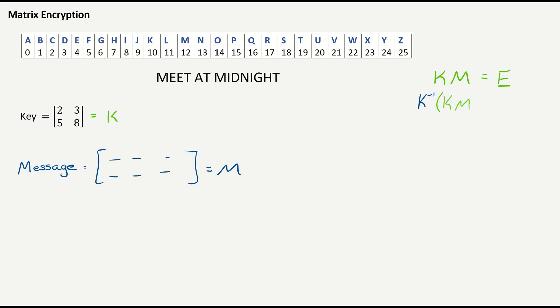We're going to multiply both sides of the equation by the inverse matrix. Notice what happens, as we know, those cancel each other out, leaving me just the message matrix equals K inverse times E. So to encode my matrix, I'm going to multiply it by the key. But then to decode it, I multiply by the inverse of the key.